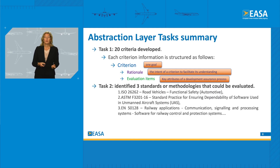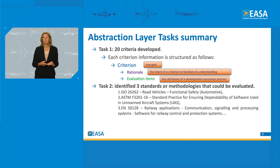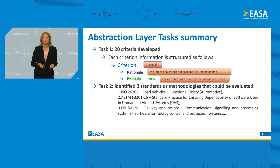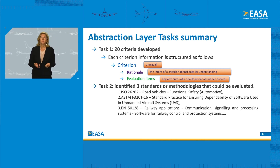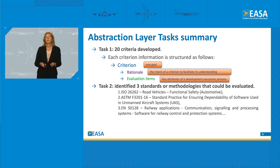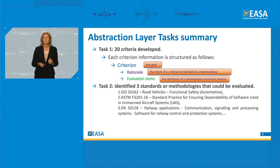For task two, we identified three standards or methodologies that could be evaluated — not to evaluate them within task two, but to identify which ones are of interest. Our industry stakeholders quickly converged to nominate: number one, the automotive standard on road vehicles functional safety; an ASTM standard F3201-16 for UAS; as well as the railway application standard EN-5128.